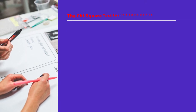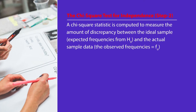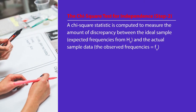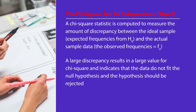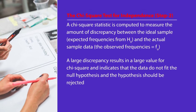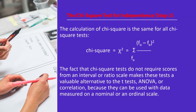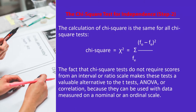For step 2 of the Chi-square test for independence, a Chi-square statistic is computed to measure the amount of discrepancy between the expected frequencies from the null hypothesis and the actual observed frequencies F0. A large discrepancy results in a large Chi-square value, indicating the data do not fit the null hypothesis and it should be rejected. The calculation is: χ² = Σ (F0 − Fe)² / Fe, and this formula is the same for all Chi-square tests.